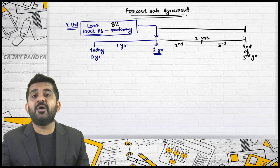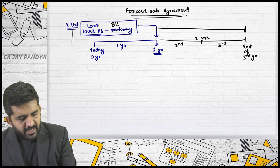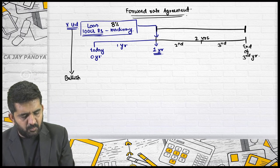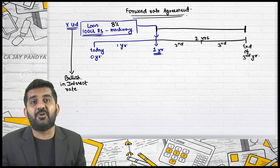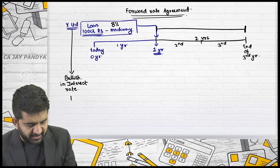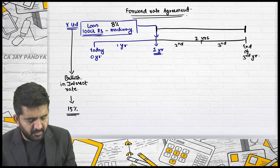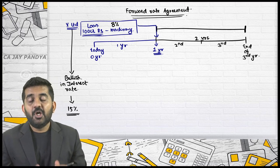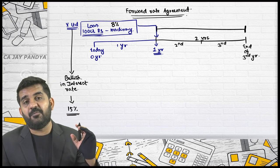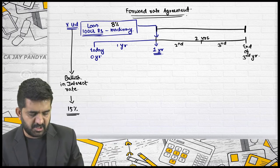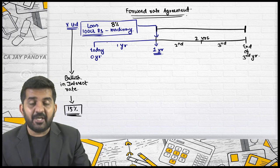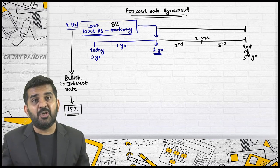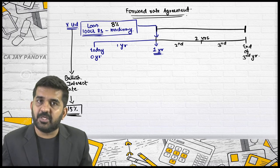This loan is required after one year. However, X Limited is bullish in interest rate — they feel that this rate of interest will increase, and so much so, they feel that the rate of interest is going to become 15%. Today interest rate is 8%, but the day on which they will be borrowing the loan, the rate of interest will be 15%.